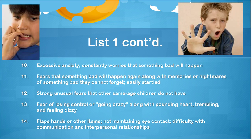Excessive anxiety. Constantly worrying that something bad is going to happen. Fears that something bad will happen again, along with memories or nightmares of something bad they can't forget. Being easily startled. You can purchase a copy of the Diagnostic and Statistical Manual of Mental Disorders 5 — DSM-5 — and look them up yourself. But the point is not what they indicate; the point is that you are paying attention that this is taking place.